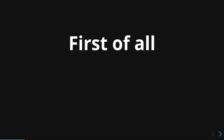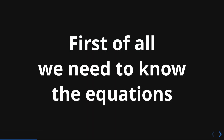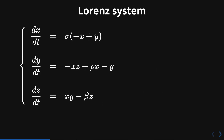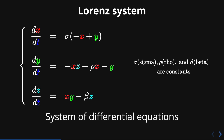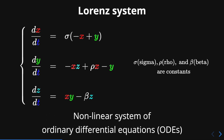First of all, we need to know the equations. The Lorenz system is defined with the following equations. These equations are the derivatives with respect to time of three different variables x, y, and z. The Greek letters sigma, rho, and beta represent constants. This set of equations is called a system of differential equations — more precisely, a nonlinear system of ordinary differential equations, or ODEs for short.